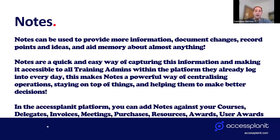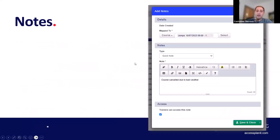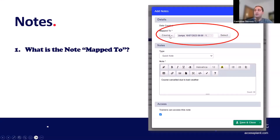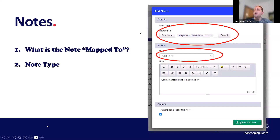Notes can be added against all these different options within the platform. Some of the most popular are courses and delegates — for example, making a note about how a course went, how a delegate performed, or if a delegate was late. This is how a note looks within the platform: first, what is the note mapped to? In this case a course, and you can use the select option to get a list of all courses to choose from — you don't have to remember the specific course name.